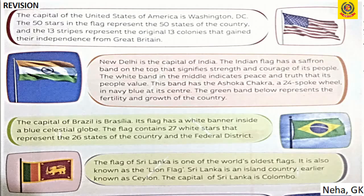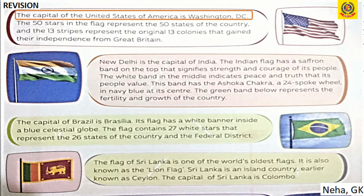The capital of the United States of America is Washington, D.C. The 50 stars in the flag represent the 50 states of the country, and there are 13 stripes which represent the 13 original colonies that gained independence from Great Britain.